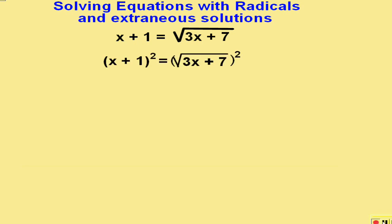On the left side, when we square x plus 1, it means to write it twice and multiply. On the right, we have a square root being squared. Therefore, what's underneath the square root can come out.